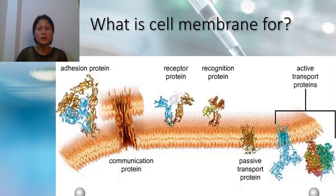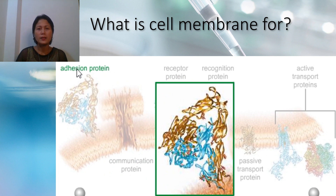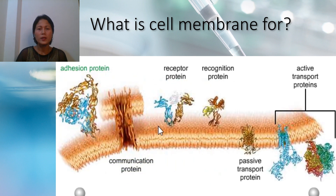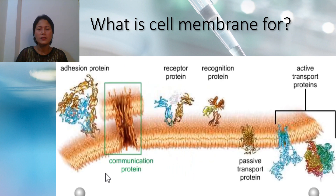One of the functions of the cell membrane is transport, aided by different transport proteins found in the cell membrane. The adhesion protein helps one cell adhere to another cell or to a protein component of an extracellular matrix — this is the ribbon model of integrin. The communication protein of the plasma membrane matches up with the communication protein of an adjoining cell, forming a channel that connects the cytoplasm of two cells and enables transmission of signals between them. This example is a gap junction.